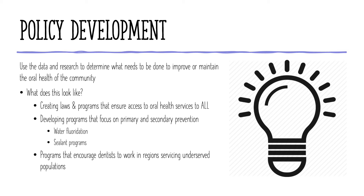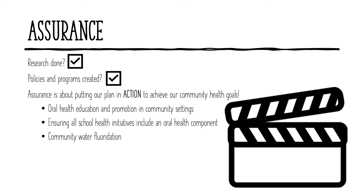You may also create laws and programs that encourage dentists to work in regions servicing underserved populations. The third and final core function is assurance. Data collection and research has been done, policies and programs have been created, and now assurance is about putting our plan into action to achieve our community health goals. This may look like increased oral health education in community settings such as schools, community centers, and places like the Boys and Girls Club. We could also ensure all school health initiatives include an oral health component, with programming to screen children for cavities and place sealants on teeth to protect them. Community water fluoridation is another great way to improve the oral health of communities, as fluoride helps to prevent cavities from occurring.